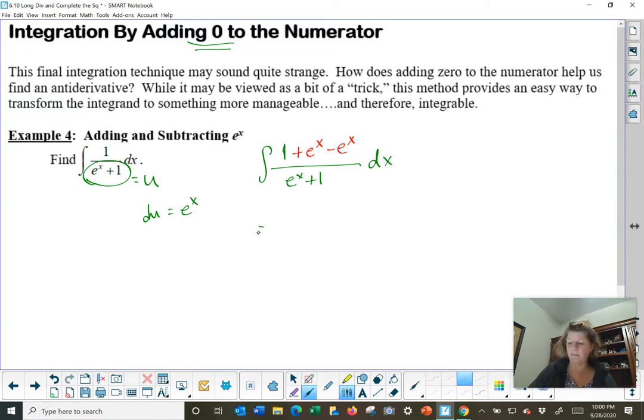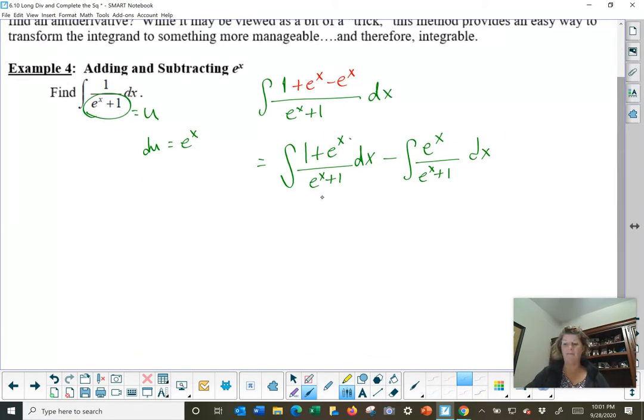e to the x plus 1 is our denominator dx. Now let's split this. Let's talk about the integral of 1 plus e to the x over e to the x plus 1 dx, subtract the integral of e to the x over e to the x plus 1 dx. What do you see about this first integral? Same over same. They're in different order, but it doesn't matter because addition is commutable. We can change the order. So that becomes really the integral of 1 dx minus the integral of e x over e x plus 1 dx. Integral of 1 is easy peasy, x.